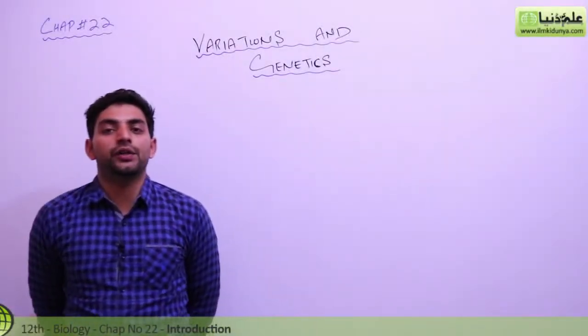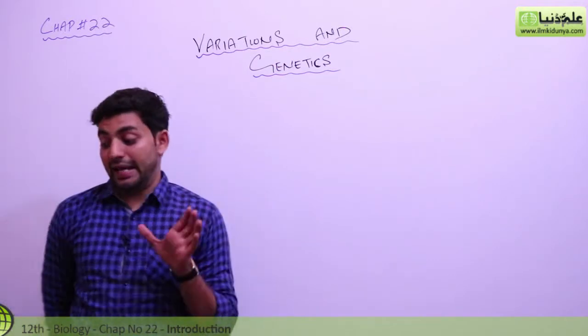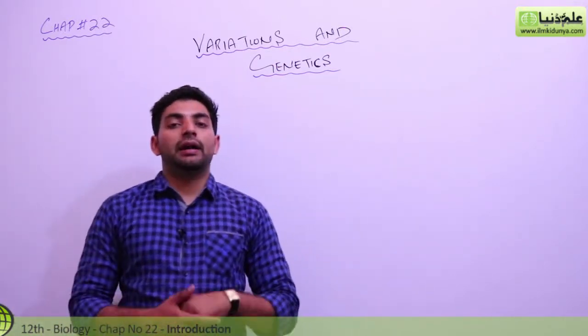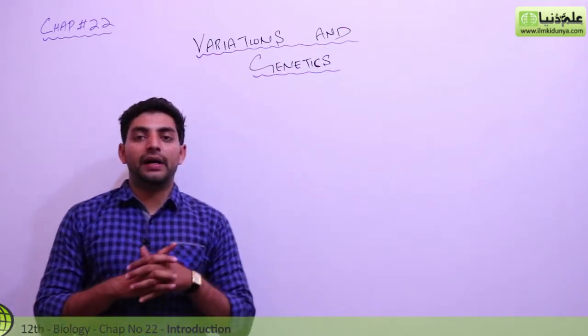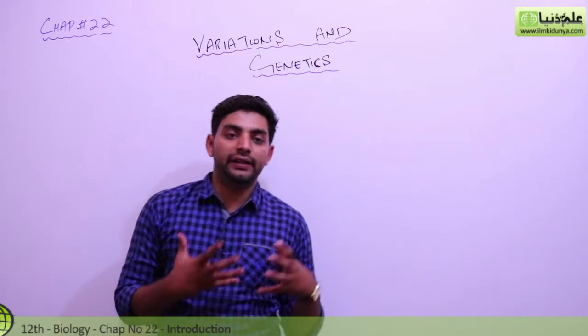Aslamo alaykum ladies and gentlemen, today we are going to start our next chapter, Variations and Genes and Genetics, that is chapter number 22. In this we will discuss in which way, in humans or in animals or in plants, there are differences.